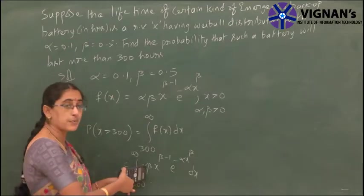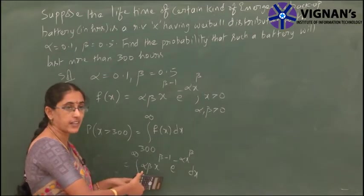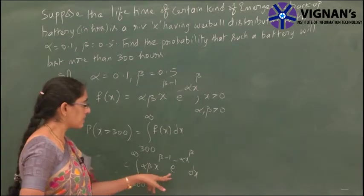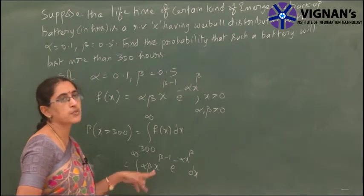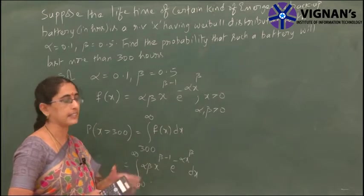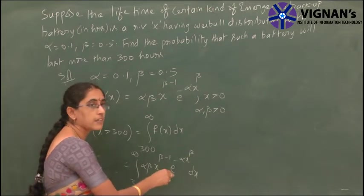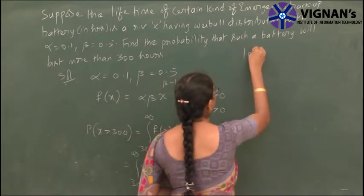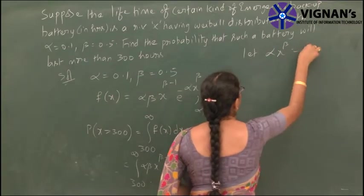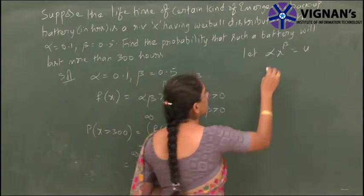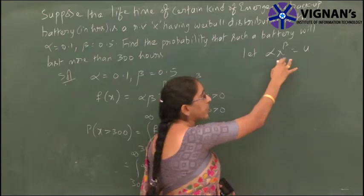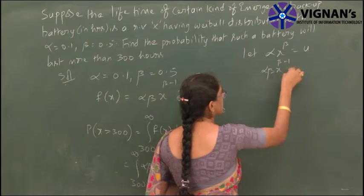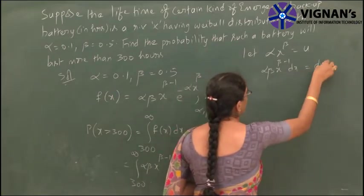We can substitute the alpha and beta values in this function and apply integration. There is also a substitution method. We will simplify first, then substitute the values of alpha and beta. Whatever is in the exponent of e, we consider as some value u. So let alpha·x^beta equal u. Differentiating both sides, alpha·beta·x^(beta-1) dx equals du.